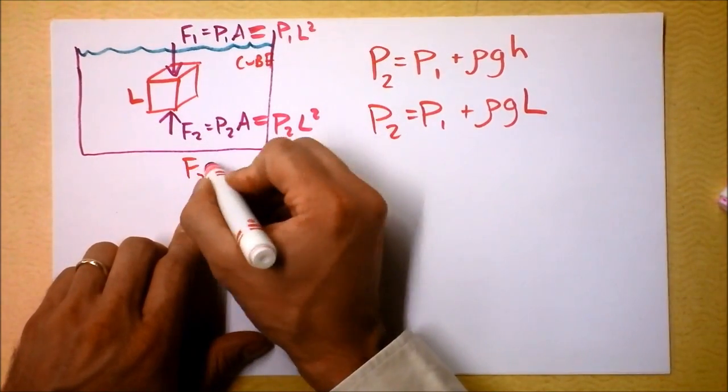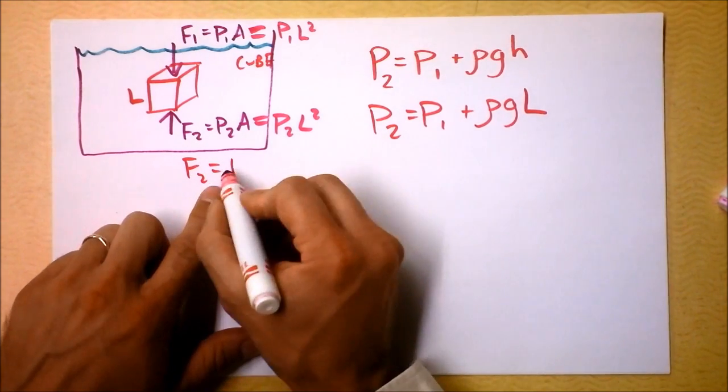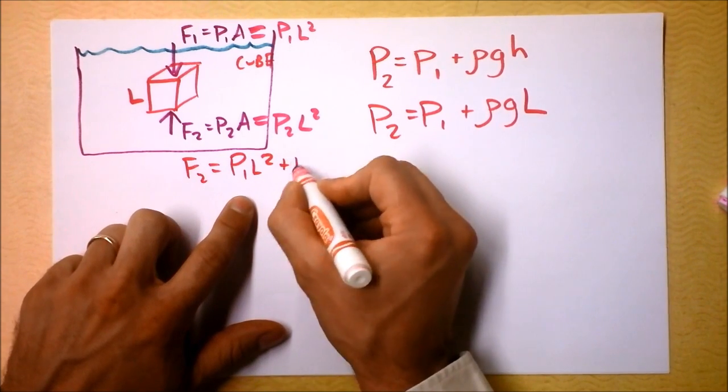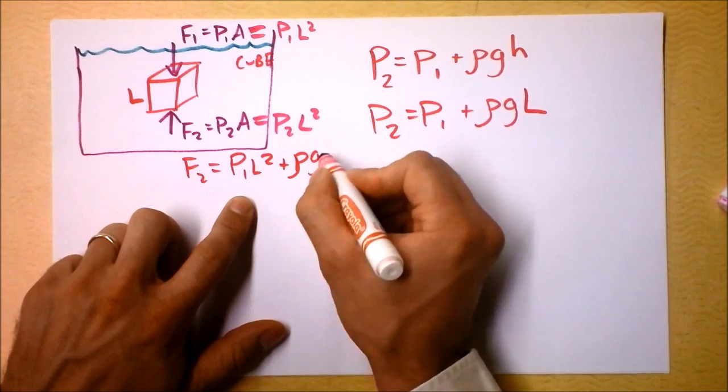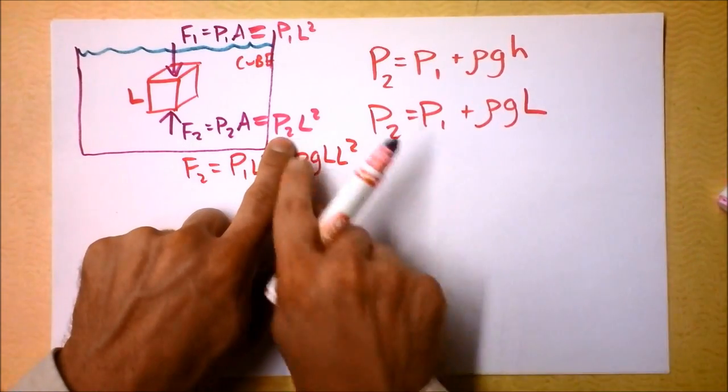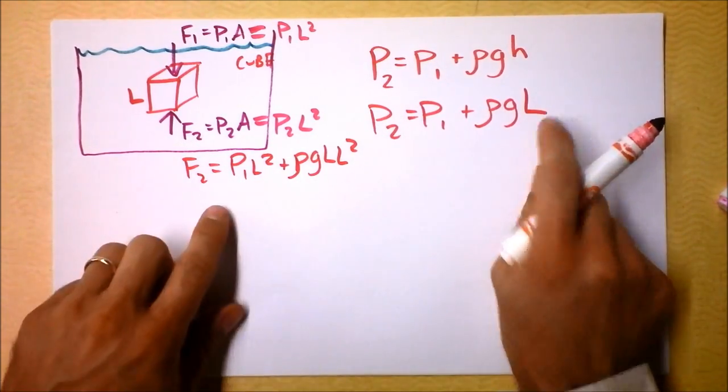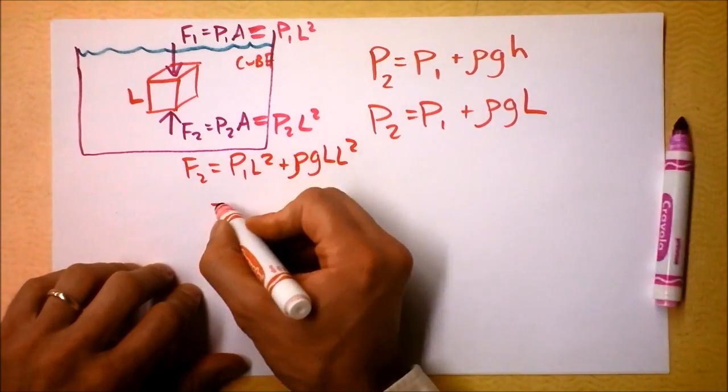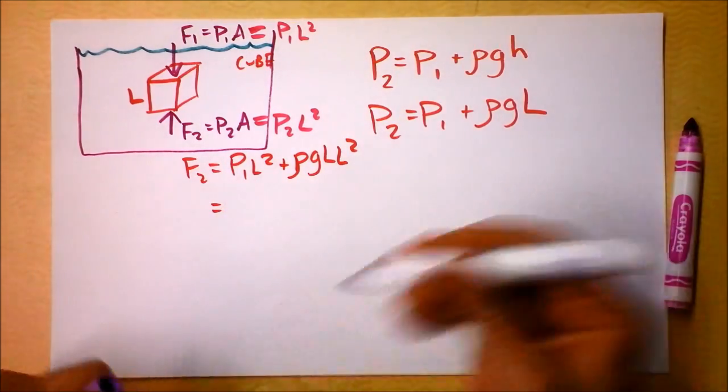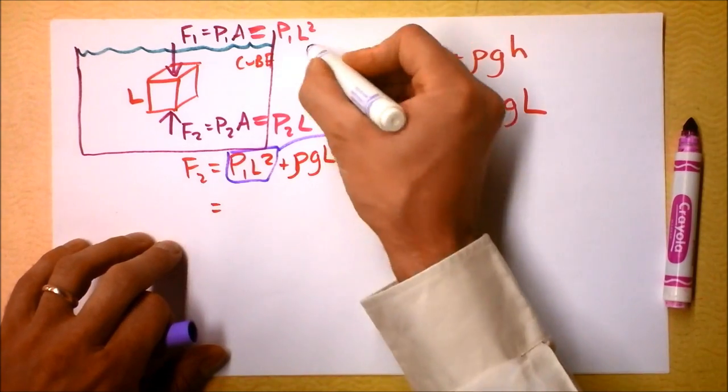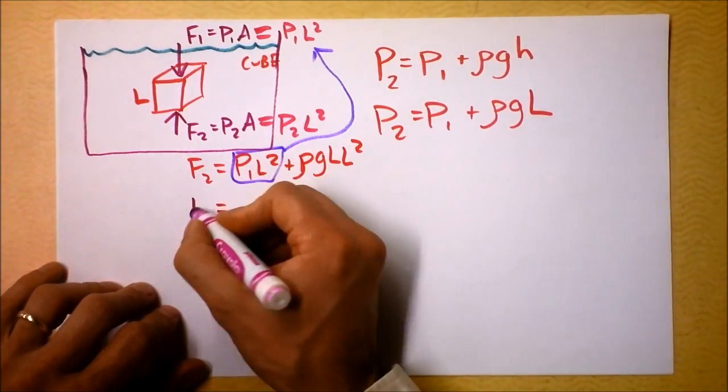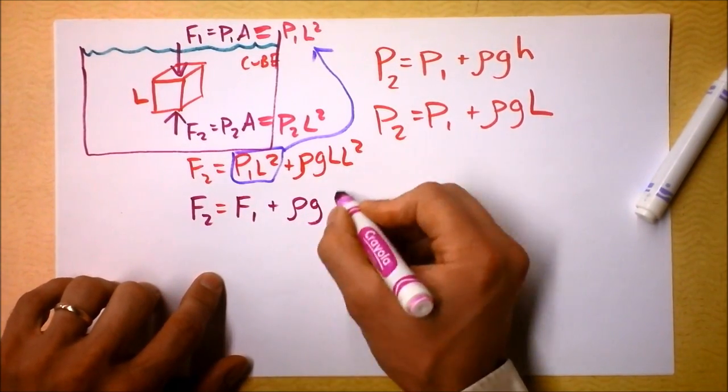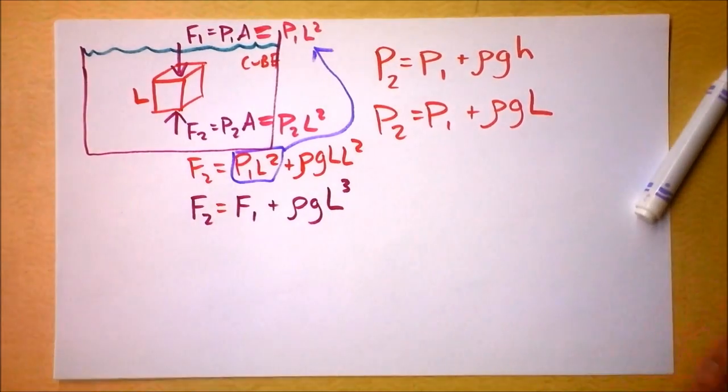So then I can say F2 is well it's pressure, it's pressure 1 times L squared plus rho G L times L squared. Do you see how I plugged in what pressure 2 is right here? So this is, let's put another equal sign here and keep going.